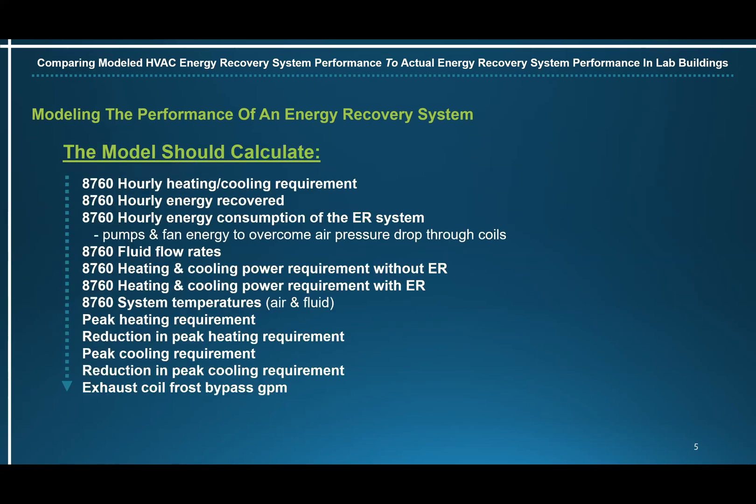The model should calculate: 8760 hourly heating and cooling requirements, 8760 hourly energy recovered, 8760 hourly energy consumption of the energy recovery system, 8760 fluid flow rates, 8760 heating and cooling power requirements, 8760 power requirement without energy recovery, 8760 system temperatures both air and fluid, the peak heating requirement, the reduction in peak heating requirement, the peak cooling requirement, the reduction in peak cooling requirement, and exhaust coil frost bypass GPMs.